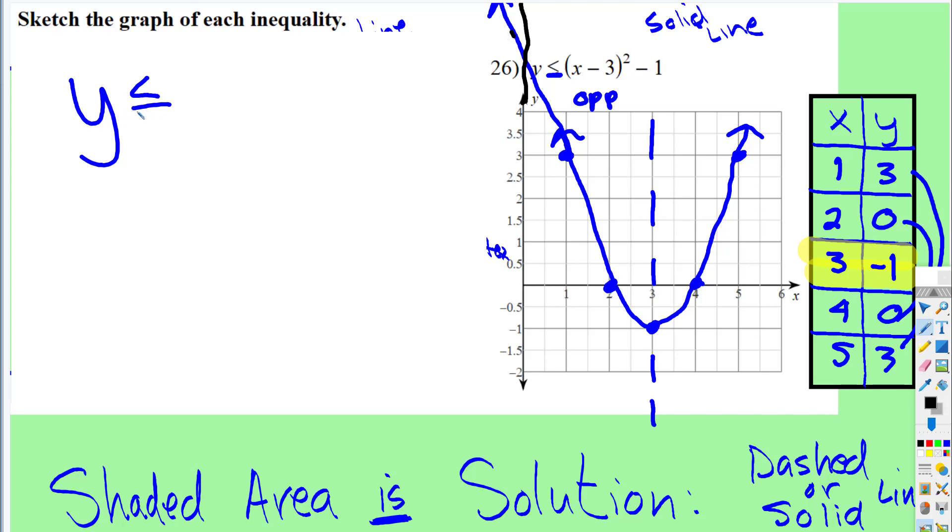This says y is less than or equal to. So if I put a dot right there on the y-axis, where do the y values on the y-axis get smaller? They get smaller below. So that's how I know to shade everywhere on the outside of that parabola.